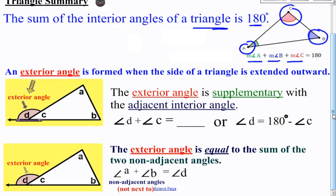An exterior angle is formed when the side of a triangle is extended outward. Right here where this line is extended outward, there is an angle formed called an exterior angle — and that angle is D. The exterior angle is supplementary with the adjacent interior angle, which is C. Supplementary means two angles that add up to 180 degrees — it's a straight line. So the measure of angle D plus C always equals 180 degrees.